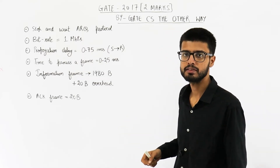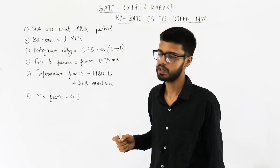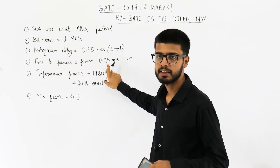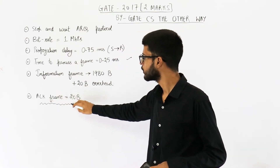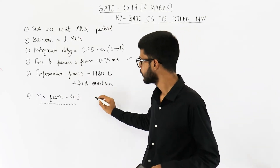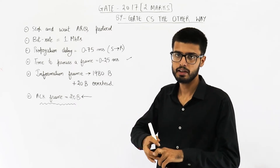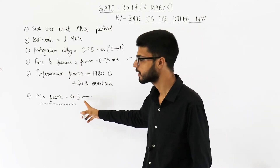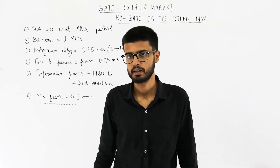Now in most questions, we ignore the fact that processing a frame will take some time. But in this question, they are specifically mentioning the processing delay for a frame. Also, we usually ignore the fact that the acknowledgement frame will take some time to get transmitted. But in this case, because they are mentioning the size of the acknowledgement frame, we cannot ignore the transmission time for the acknowledgement frame. That means we need to consider the transmission time taken by the receiver to transmit the acknowledgement frame.